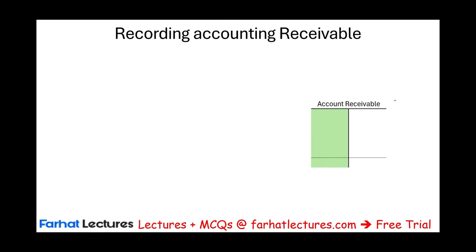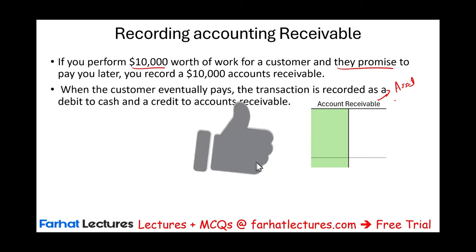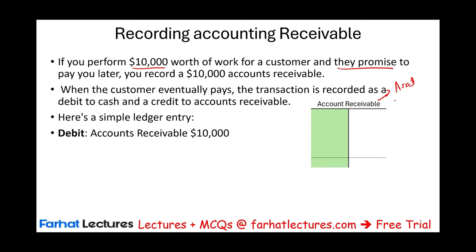Accounts receivable is an asset and it's created when you perform work. If you perform $10,000 worth of work for a customer and they promise to pay you later, you would record $10,000 worth of accounts receivable. When you perform the work, you debit accounts receivable $10,000 — it goes up — and about 99% of the time you credit sales revenue.